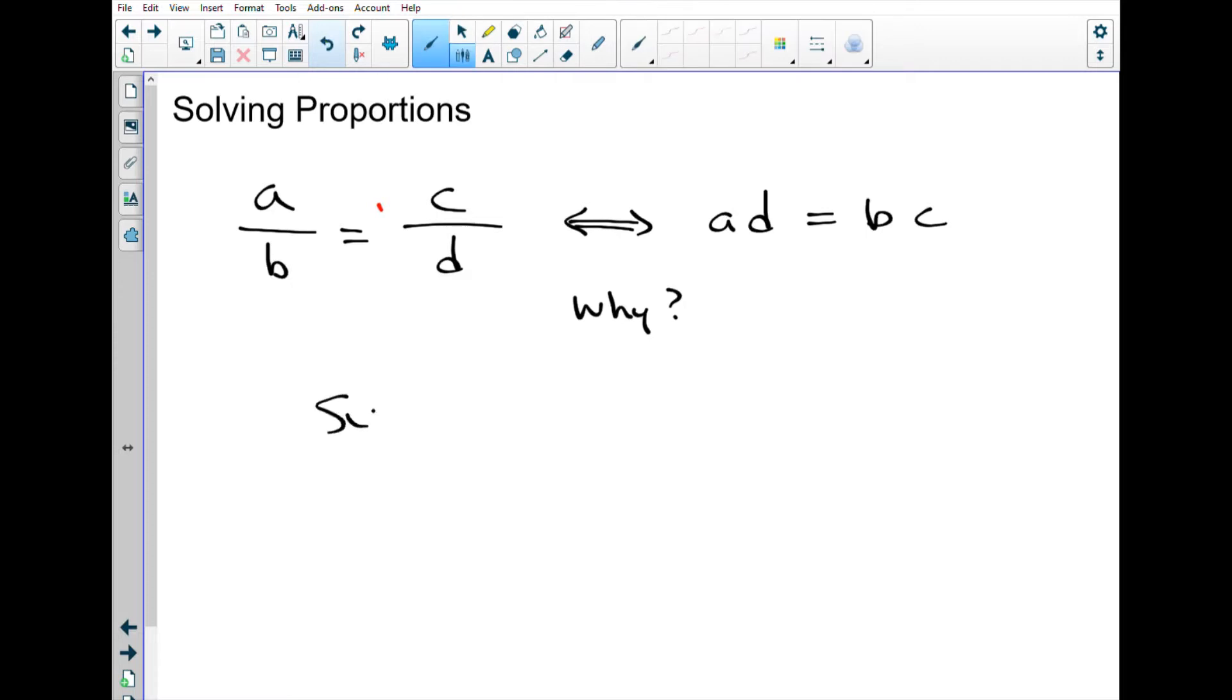So let's first make sure we understand why ad equals bc is equivalent to the fraction. So let's start with ad equaling bc. Can we then turn that into the ratios? Well, we can divide both sides of this equation because it is an equation, so we can do whatever we want as long as we do to both sides. And let's divide both sides by bd.